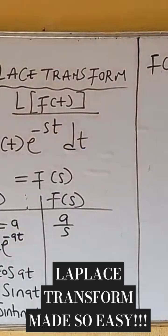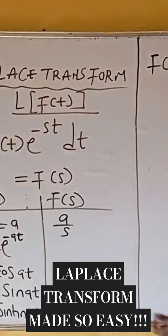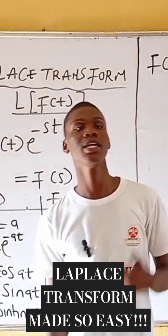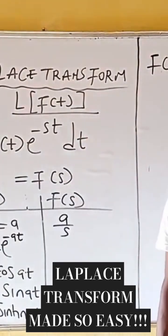Next up, I'm having that f of t is equal to exponential negative at. F of t is equal to exponential negative at. Have it in mind that same steps, nothing is changing.